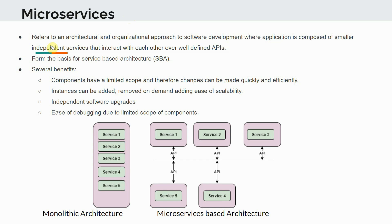In this section we will talk about microservices, which is yet another technology that enables 5G core architecture and is heavily used. Microservices refers to an architectural and organizational approach to software development where an application is composed of smaller independent services that interact with each other over well-defined APIs.